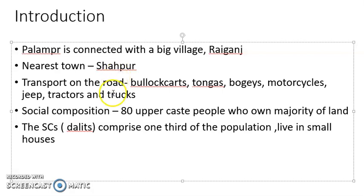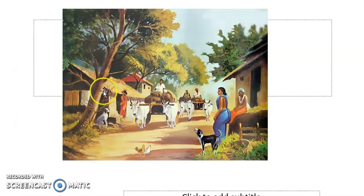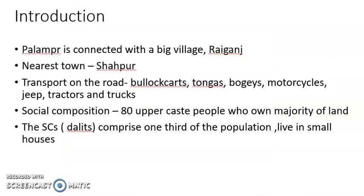There are various types of transport on the road. Bullock carts, tongas, bogies, motorcycles, jeep, tractors, trucks, etc. There are many types of transport services available in Palampur.